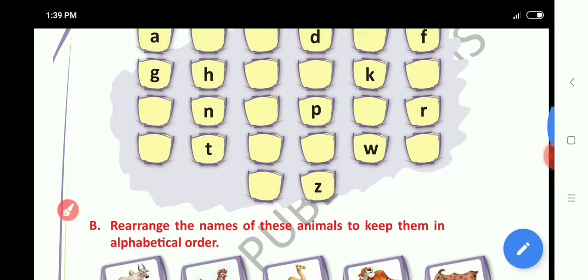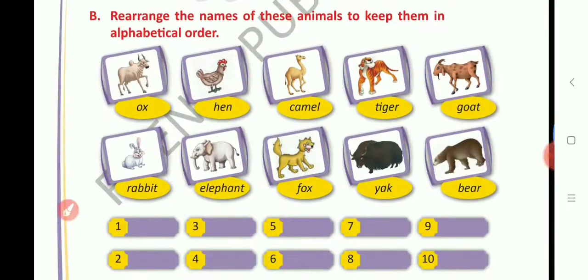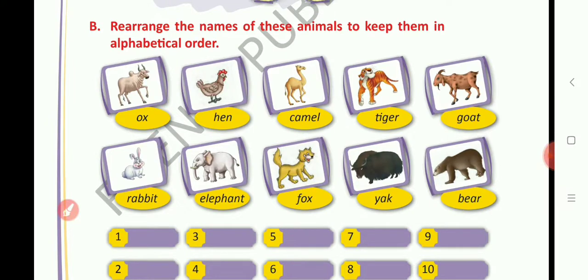Now move to the next question. B: Rearrange the names of these animals to keep them in alphabetical order. Children, alphabetical order means which word start with the A, that will come first. Then after which word start with the B. That will be the next. Then after C, then after D.